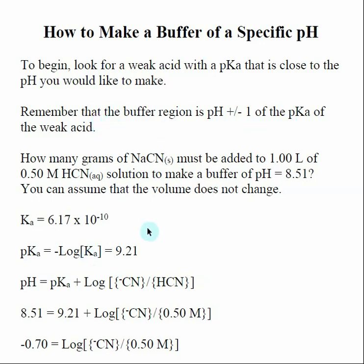With this, what we need to know is what we're starting with. This is an example. There are a few different ways of doing this calculation. In this case, I've told you that I have a 0.5 molar HCN solution, which is our weak acid, and I want to make a buffer with a pH of 8.51.